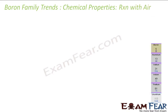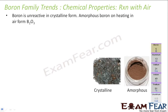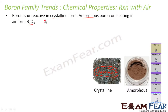Let's start with the reaction with air. Boron in its crystalline form is unreactive, but in amorphous form, on heating, it forms B2O3. So there are two forms of boron — amorphous and crystalline. The crystalline form is unreactive and can be kept outside, while the amorphous form is slightly reactive and is kept in a bottle. Once you heat it in air, it gives B2O3. The balanced reaction is: boron reacts with oxygen to give B2O3.